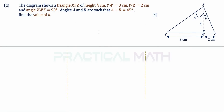In part D, triangle XYZ contains two smaller right-angle triangles: XWY and XWZ. In triangle XWY, the side YW (3 cm) is opposite angle A and H is the adjacent side. In triangle XWZ, side WZ (2 cm) is opposite angle B and H is again the adjacent. We apply SOHCAHTOA — tangent equals opposite over adjacent — to both triangles.